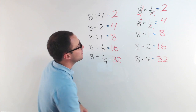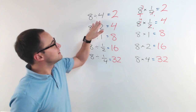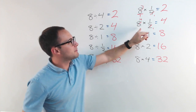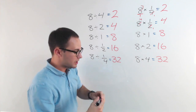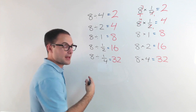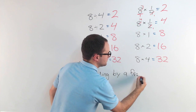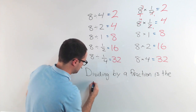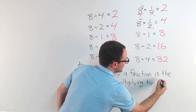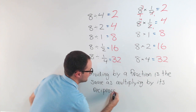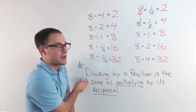Why is that? Dividing by four is the same thing as multiplying by one-fourth. Dividing by two is the same thing as multiplying by one-half. Dividing by one is the same thing as multiplying by one. Dividing by one-half is the same thing as multiplying by two. So, dividing by a fraction is the same as multiplying by its reciprocal. Make sure you have this written down.